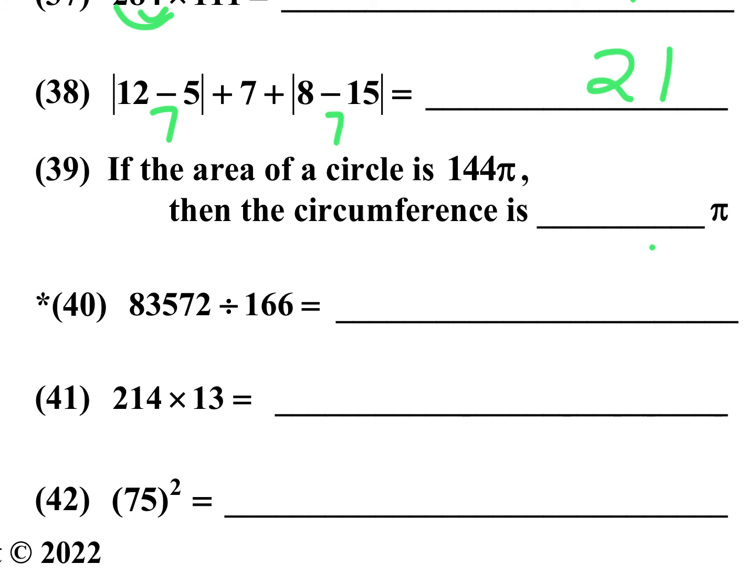Number 39, if the area of a circle is 144 pi, that's pi r squared, that tells you that the radius is 12. The circumference is 2 pi r, so 2 times that, 2 times 12 is 24, so it would be 24 pi. So just write 24 for number 39.